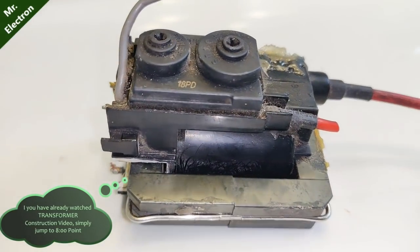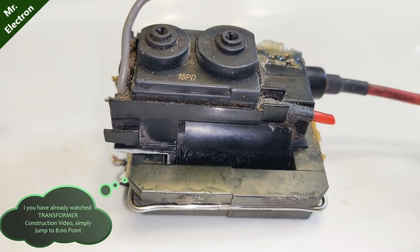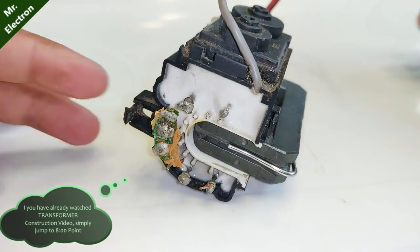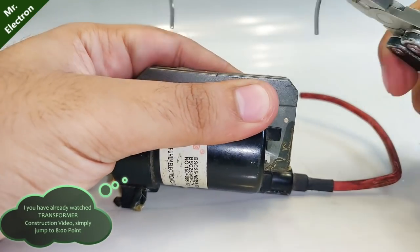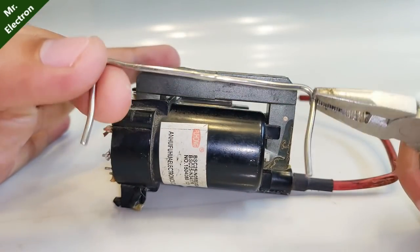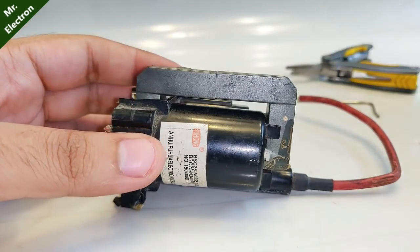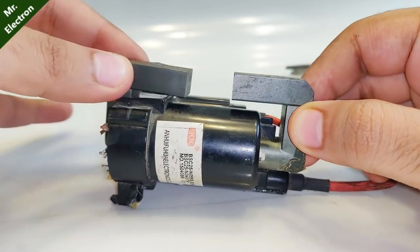Hi guys, you're watching Mr. Electron. This is a high voltage transformer from a CRT TV. In this video I'm not going to make a high voltage supply, but a low voltage high current supply.